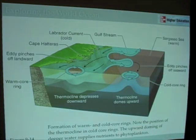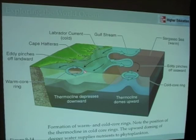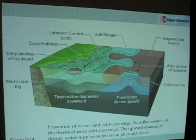Here's an image from the book — an idealized diagram of the formation of these rings. When you have a meander that traps cold water, we get a cold core ring. When you have a meander that traps warm water, we get a warm core ring. These cold core rings, because of their cyclonic circulation pattern, actually bend the thermocline upwards, and as a result bring cold, nutrient-rich water towards the surface in these cold core rings.